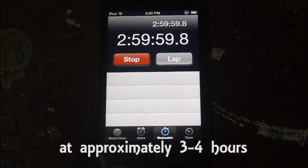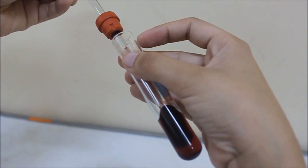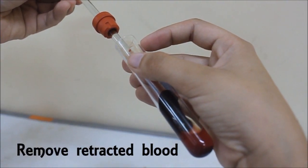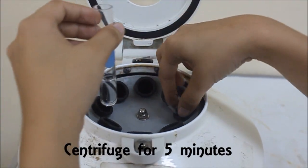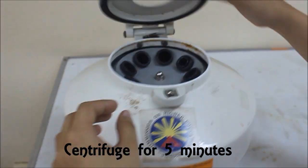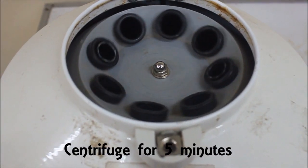Once the blood has retracted or the blood clings to the stirring rod, remove the cork containing the stirring rod and the retracted blood. Centrifuge the remaining serum in the tube so as to eliminate the remaining cells.